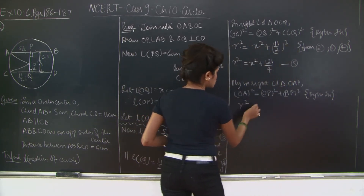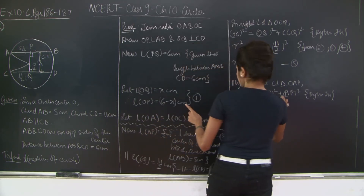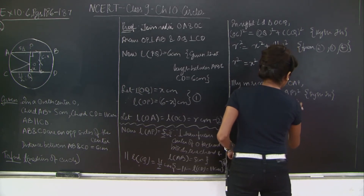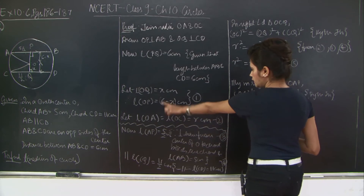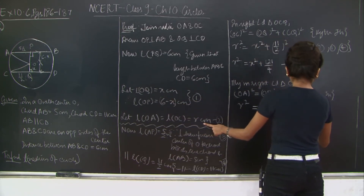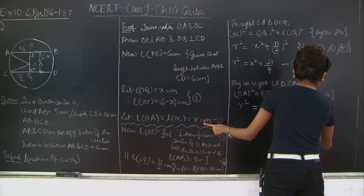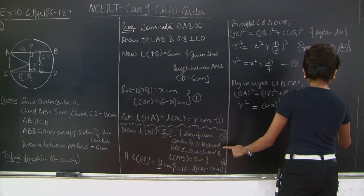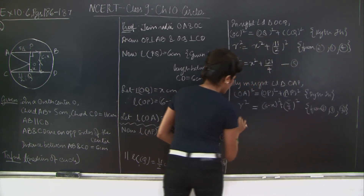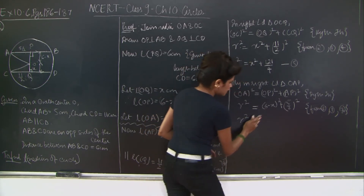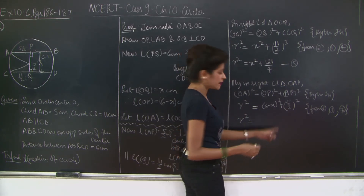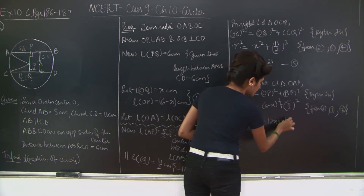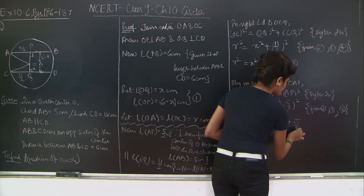OA is the radius R. OP = 6 - X and AP = 5/2. So R² = (6 - X)² + (5/2)². Expanding: R² = 36 - 12X + X² + 25/4. Let's mark this as equation 6.